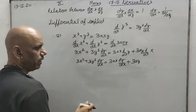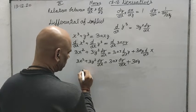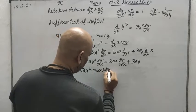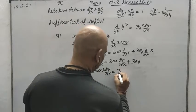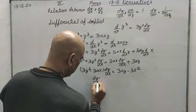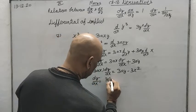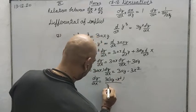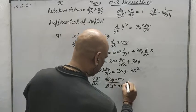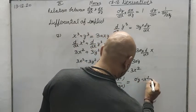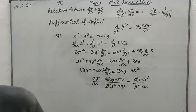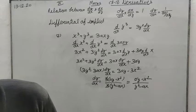All terms containing dy by dx remain on one side; all terms not containing dy by dx go to the other side. So: (3y squared minus 3ax) dy by dx equals 3ay minus 3x squared. Taking 3 common from both sides and cancelling, dy by dx equals (ay minus x squared) upon (y squared minus ax). This is the differential of x cubed plus y cubed equals 3axy with respect to x.